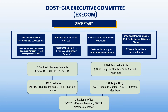The DOST-GIA Executive Committee is comprised of the following: the Secretary, the Under Secretaries, Assistant Secretaries, the Executive Directors of the 3 Sectoral Planning Councils, Representatives from the R&D Institutes, Collegial Body, S&T Services, and Regional Offices.